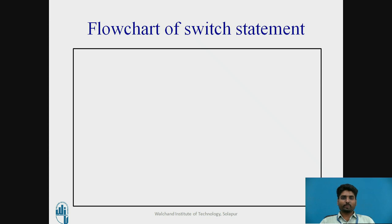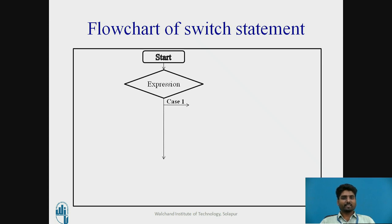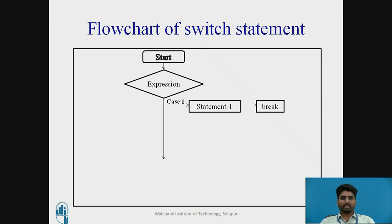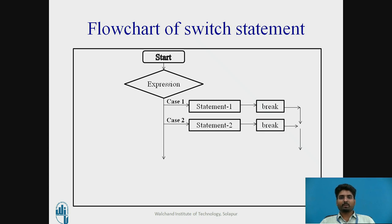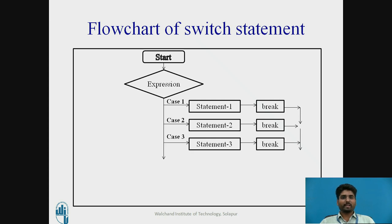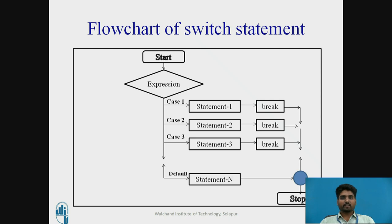The flowchart of the switch statement: starting with the test expression, if case 1 is true, statement 1 is printed and it breaks out of the loop. If case 1 is false and case 2 is true, statement 2 is printed and it breaks. If both case 1 and case 2 are false, case 3 and statement 3 are printed and it breaks. Finally, the default statement is always printed, then the program ends.